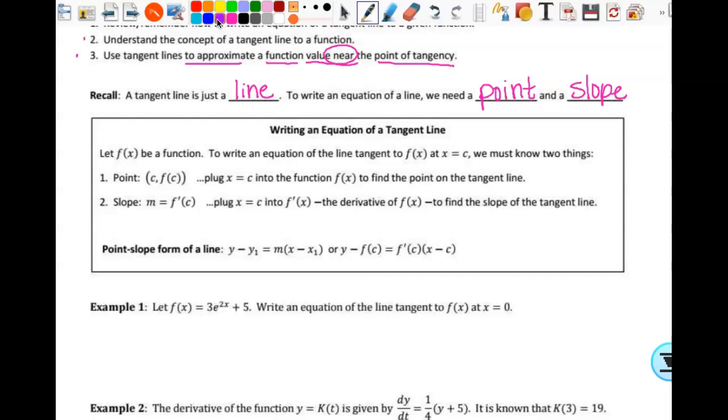So a little review here. To write an equation of a tangent line, let f(x) be the function. To write an equation at x equals c, we have a point: (c, f(c)) because it comes from the original. The slope is f'(c) because we just said that. It comes from the derivative, right? And then we know point slope form and what that looks like. That's just all the little reminders of stuff we already know how to do.